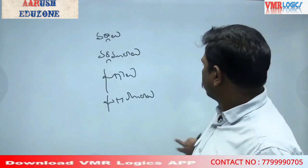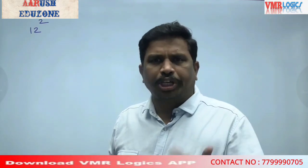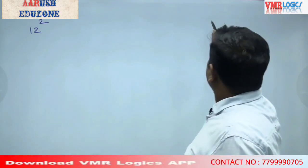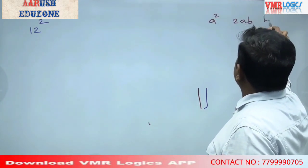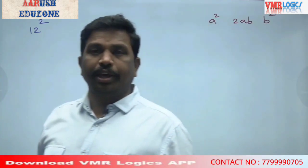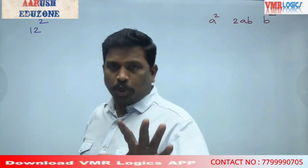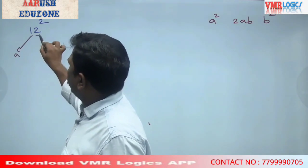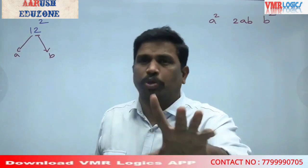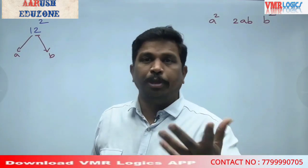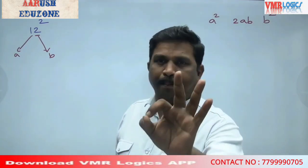Now you can understand with 12 squared. Start with the rule. The rule is: A square, 2AB, B square. Observe — this is A, this is B. B is always one digit, below the bar. This is one digit.